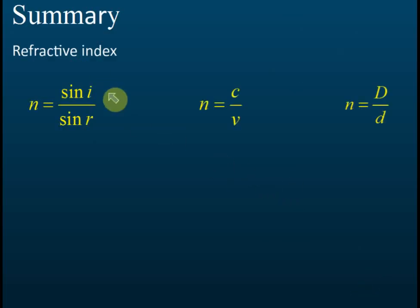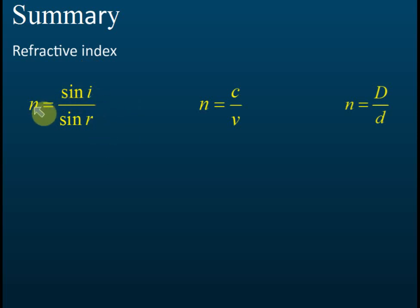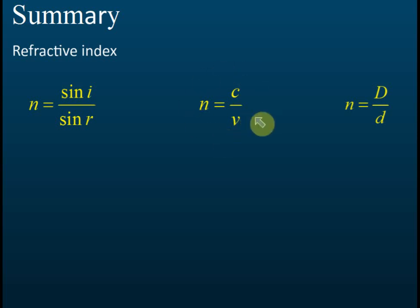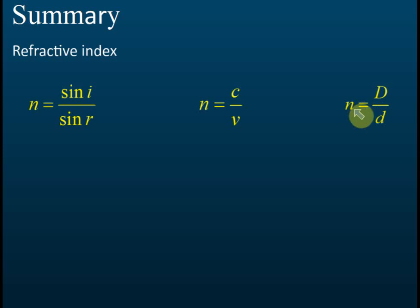So we have learned about refractive index, and there are three formulas to find it. The first is from Snell's law: sine i over sine r equals the refractive index. The second is speed of light in vacuum divided by speed of light in the medium. The third is real depth over apparent depth. All three are equal to the refractive index.